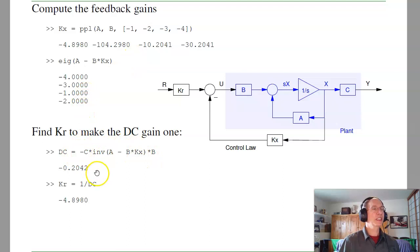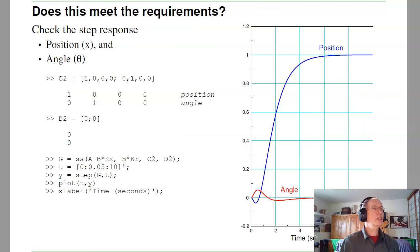Now find kr to make the DC gain 1. C was 1, 0, 0, 0. I'm measuring position. And so I need a gain of minus 4.89 to make the DC gain 1. So let's try it out.